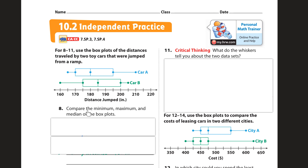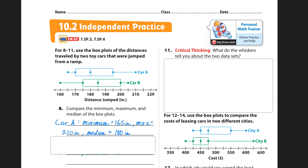We're asked to compare the minimum, maximum, and median of the box plots. For car A, the minimum is 165, the max is 210, and the median is 180. The median is that middle line — the line inside the box, which is 180 here. It's not always exactly in the middle of the box, but it's the line inside.